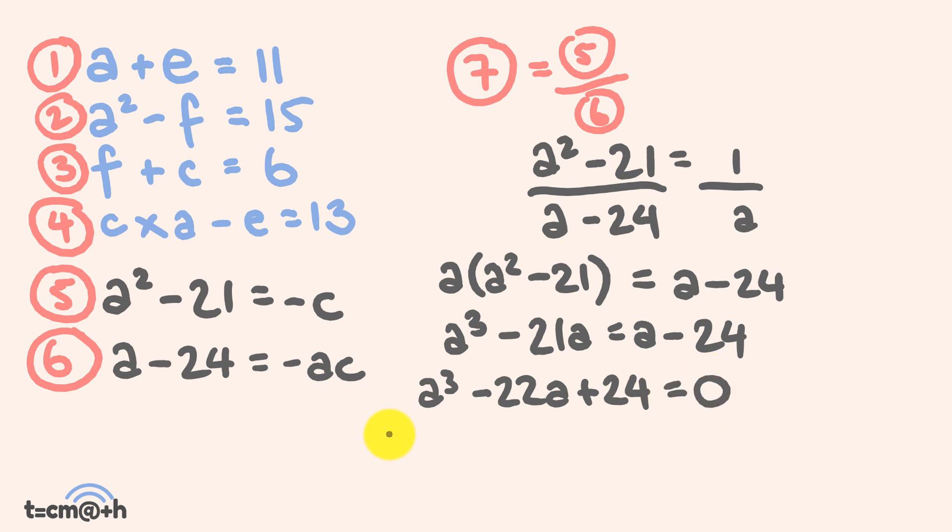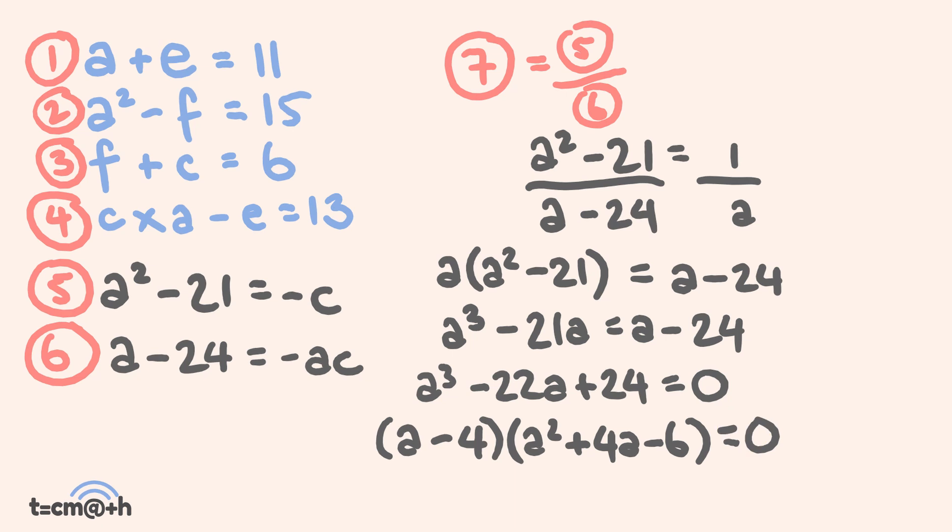Now let's factorize this equation. We get (a - 4)(a² + 4a - 6) = 0. Finally, we can solve for a. So a is going to equal 4, and we can go through now and substitute in all our values and get those answers that we had before.